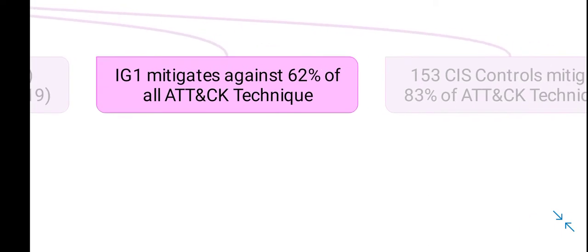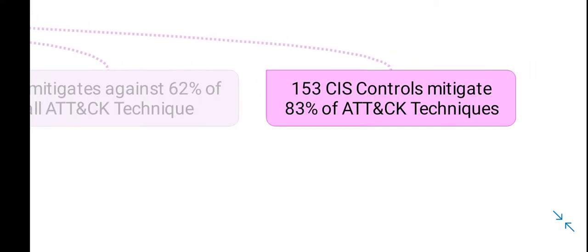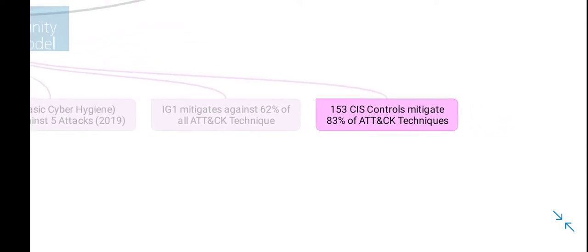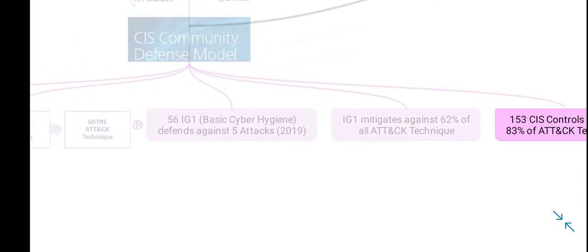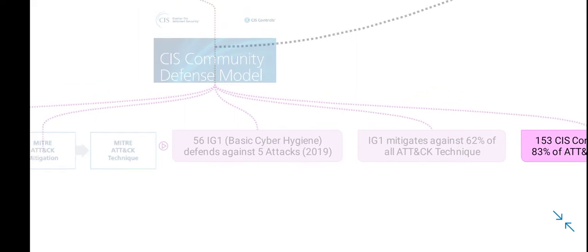Moreover, it says that all 153 CIS controls mitigate 83% of all APT attack techniques — all techniques used by APT groups. So if an organization with large resources implements the controls up to implementation group 3, then 83% of APT attacks are stopped.